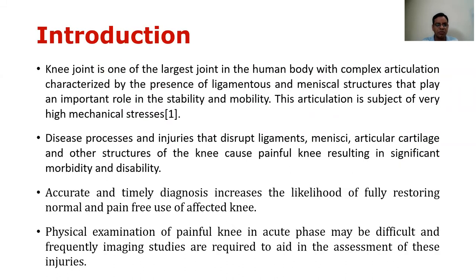Introduction. The knee joint is one of the largest joints in the human body with complex articulation, supported by the presence of ligaments and menisci that play an important role in stability and mobility. This articulation is subject to very high mechanical stress. Processes and injuries that disrupt ligaments, articular cartilage, and other structures of the knee cause painful knee, resulting in significant morbidity. Accurate and timely diagnosis increases the likelihood of restoring normal and pain-free use of the affected knee. Physical examination of a painful knee in the acute phase may be difficult, and frequently imaging studies are required to aid in assessment of these injuries.